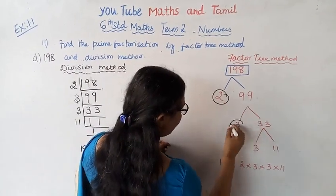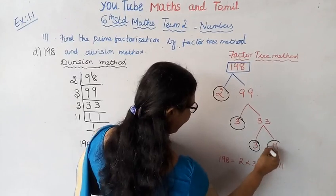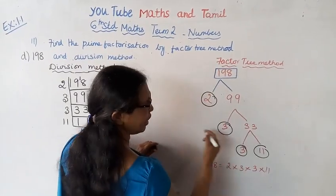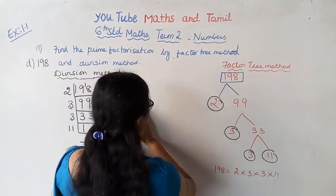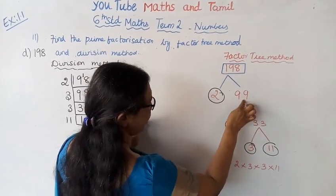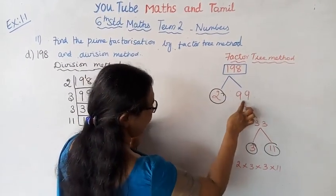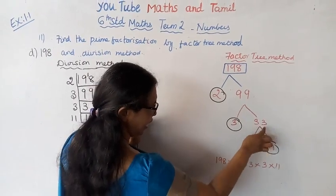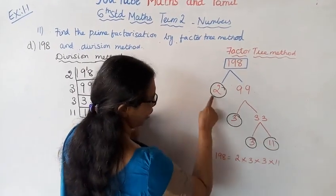2, 3, 3, 11. Factor tree method versus division method - division method is easier. 198 is 2 into 99, 99 is 3 into 33, 33 is 3 into 11.